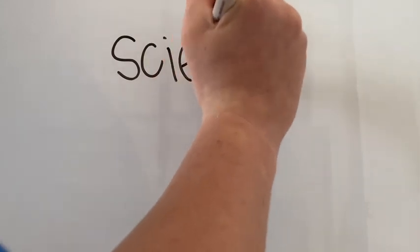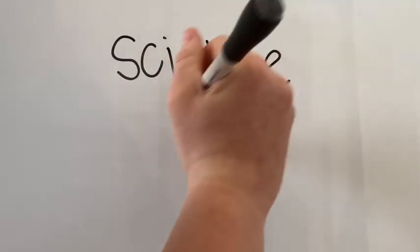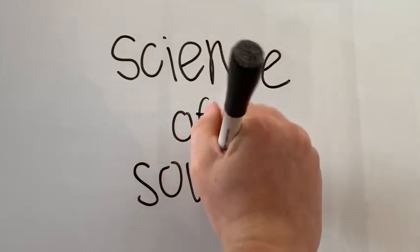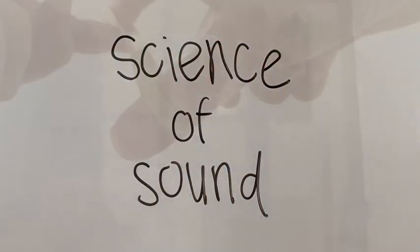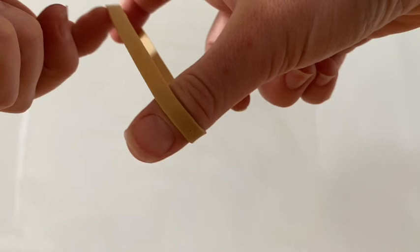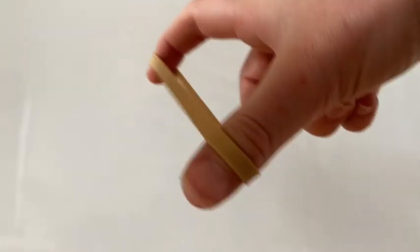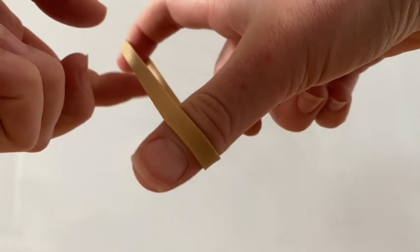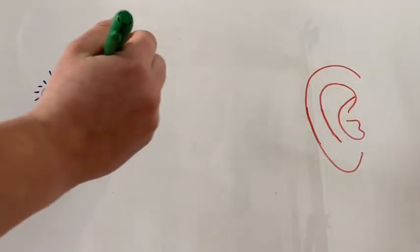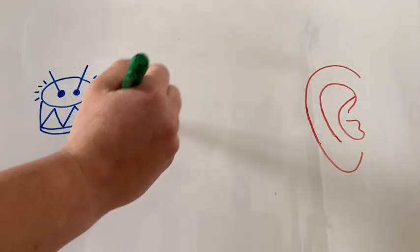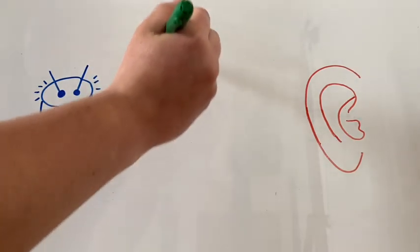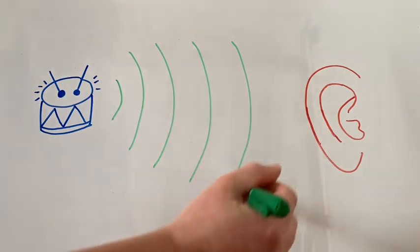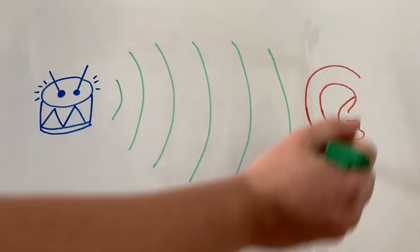Today we're going to talk about sound and especially how animals use sound. Before we get to that, we must understand what sound is. Sound is a vibration that moves through a gas, liquid, or a solid. These vibrations move in a pattern of waves. Sound waves move through the air and eventually make it to your eardrum, where your brain turns it into something you recognize.